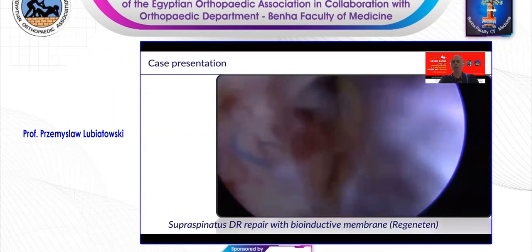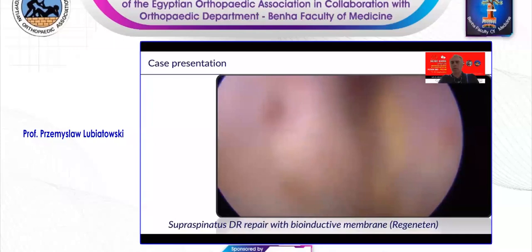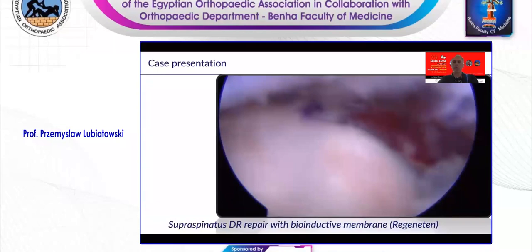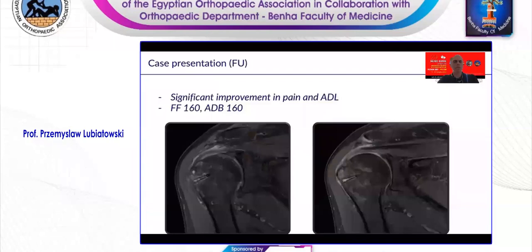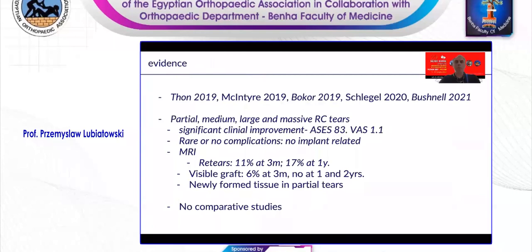That procedure is much shorter than the previous one — usually takes 15 to 20 minutes to finish the insertion of the membrane. The final picture is that the patient has improved and has much better function. Moreover, the tendon is fully healed to the footprint area with no visible graft at four months. There has been some limited evidence from recent prospective studies applying the membrane to partial, medium, large, or massive tears, with significant clinical improvement and rare or no complications. MRIs would show re-tear rates of about 11% at three months and 17% at one year, with the graft visible at three months in only 6% of cases and not visible at one to two years.